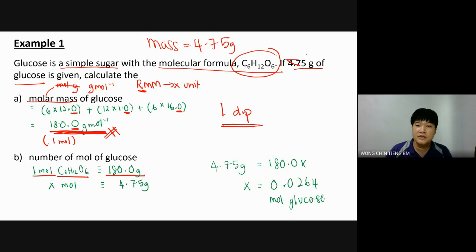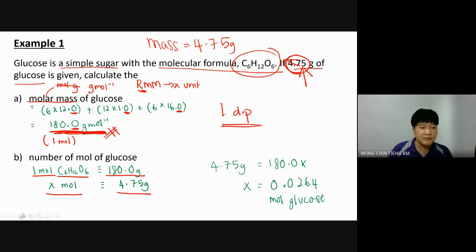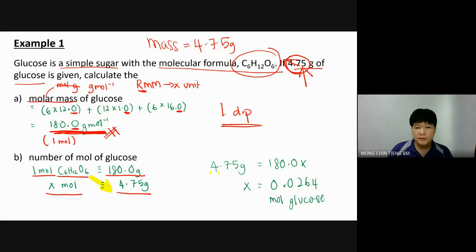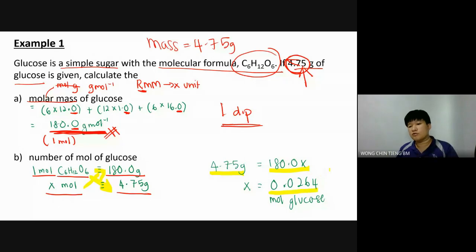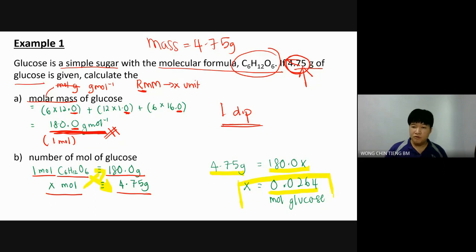Second question: calculate the number of moles of glucose. Molar mass is the mass when it's one mole. So one mole of glucose ≡ 180 grams. I only have 4.75 grams, so: 1 mole ≡ 180 g, X moles ≡ 4.75 g. Cross multiply: 1 × 4.75 = 180 × X, so X = 0.0264 moles of glucose. This number of moles will be used for the rest of the question.